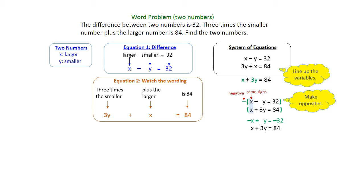And now you're ready to add the equations together. The x's cancel, which is what we wanted. And now we have 4y equals 52, because 84 minus 32 is 52.